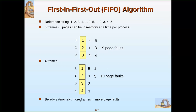Now let us imagine we have four frames instead. Pages one, two, three, four all load causing four page faults. Then one is already there, two is already there — no page faults. Then five comes; page one is the oldest so it is replaced with five. Then one comes again, it is not there, so two is replaced. Then two comes, three is replaced. Then three comes, four is replaced. Then four comes, five is replaced. Again five is referenced. So with four frames there are more page faults than with three frames.